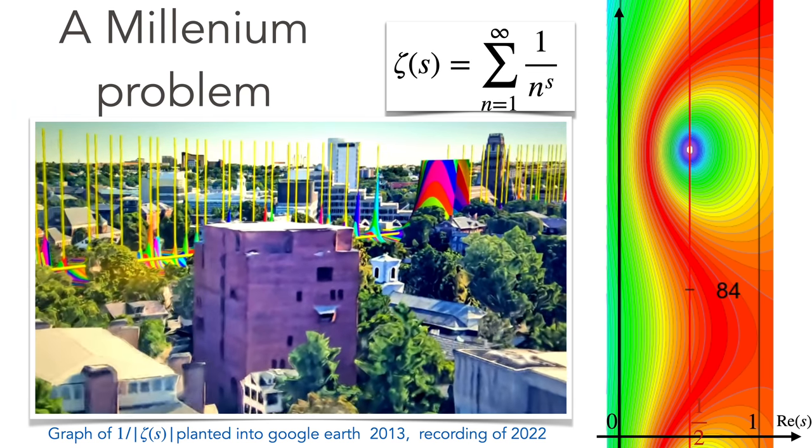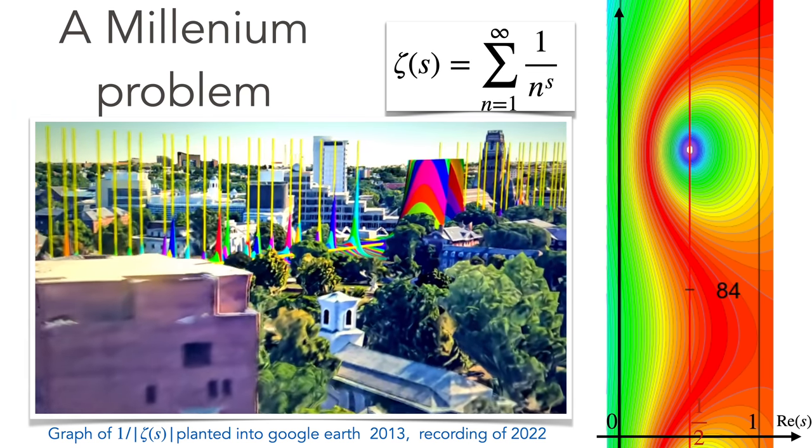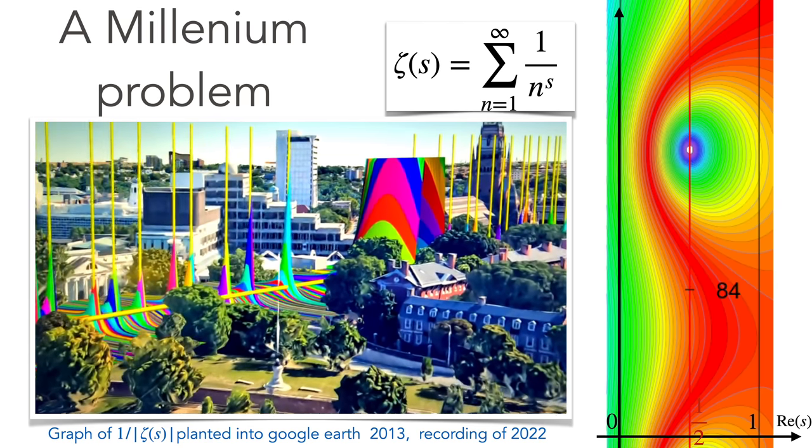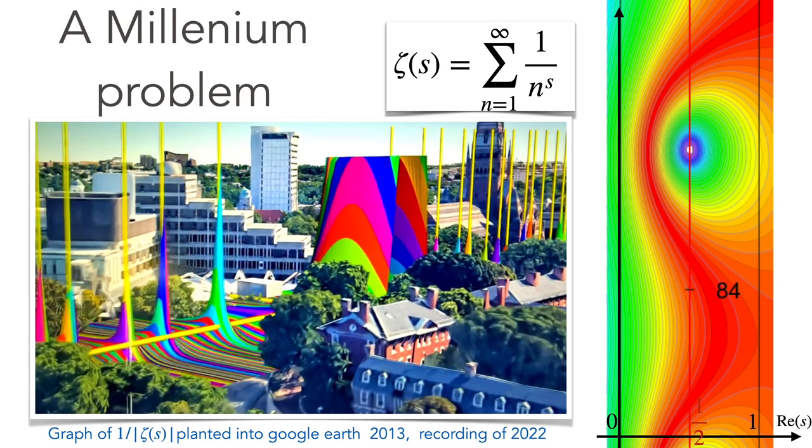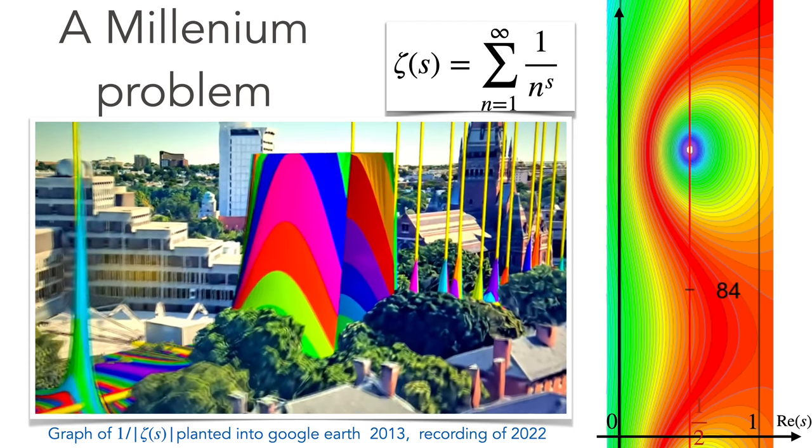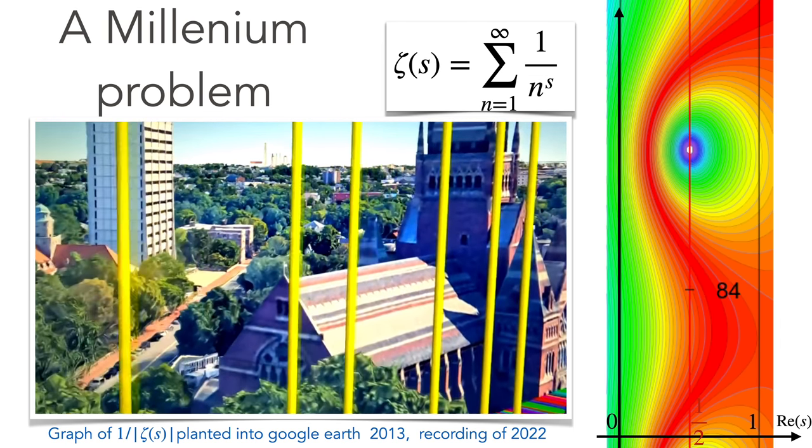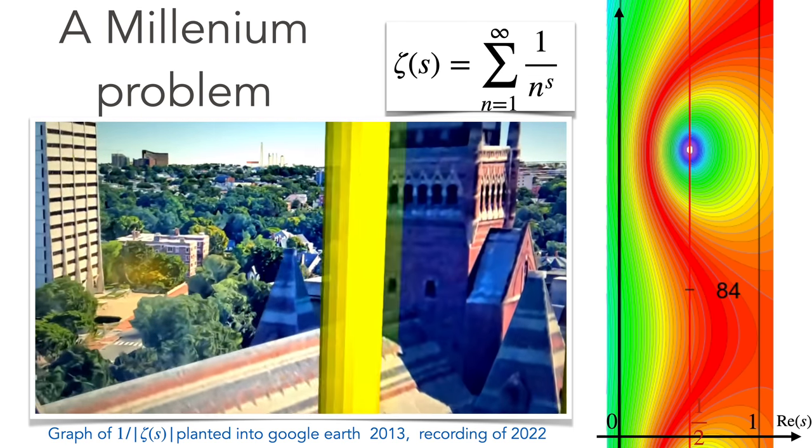Here we see the graph of a related function, so the poles are the roots. They are all on a line, placed it in Google Earth in 2013 and just flew it again in the new Google Earth 2022.